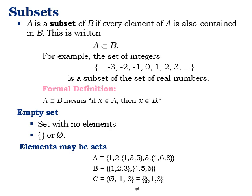The empty set is a set with no elements, indicated by the null symbol or empty curly braces. Note that elements may themselves be sets. For example, we can have a set containing the element 1, the set {1, 3, 5}, and the set {4, 6, 8} — meaning an element can itself be a set.